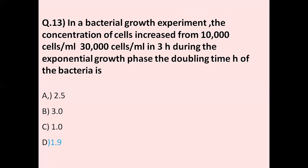Question number 13: In a bacterial growth experiment, the concentration of cells increased from 10,000 cells per ml to 30,000 cells per ml in 3 hours during the exponential growth phase. The doubling time of the bacteria — the correct answer is option D, 1.9 hours.